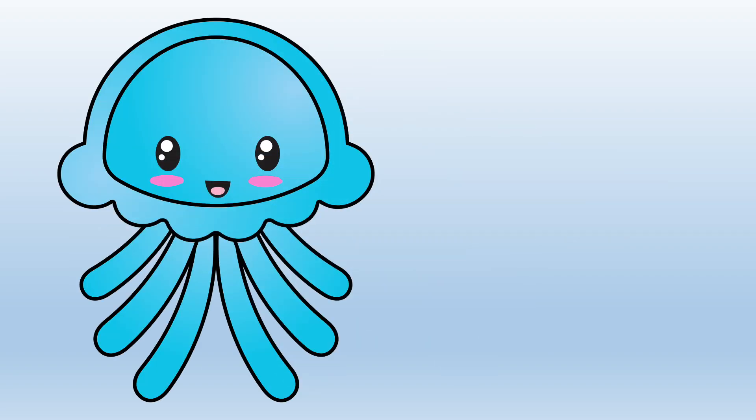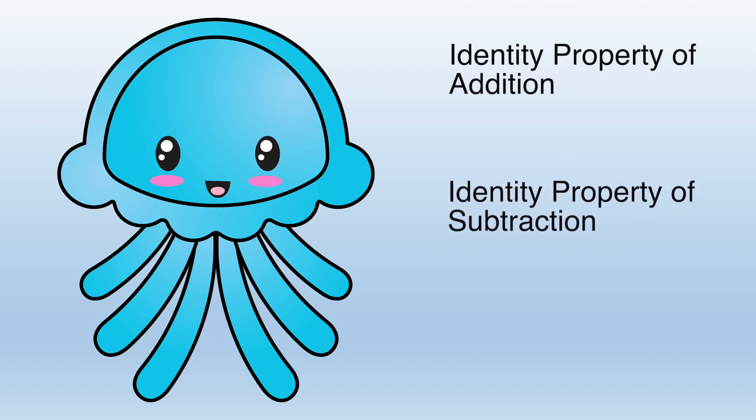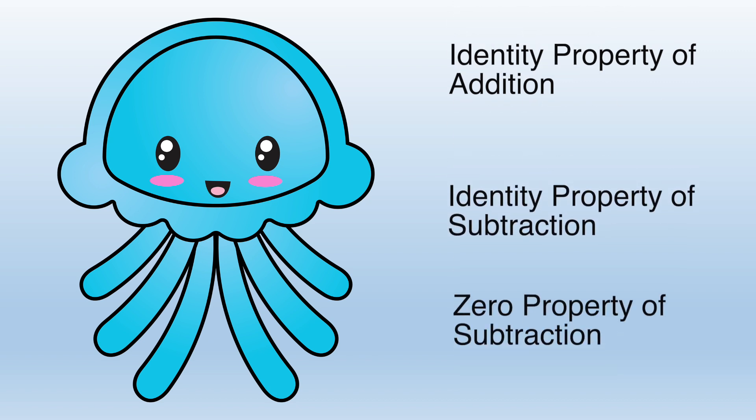Joey also discovered the identity property of addition, the identity property of subtraction, and the zero property of subtraction.